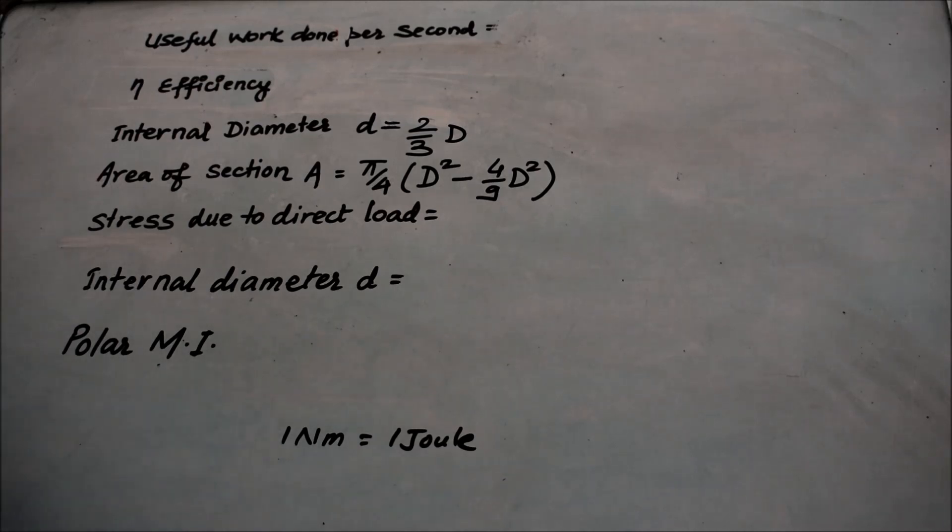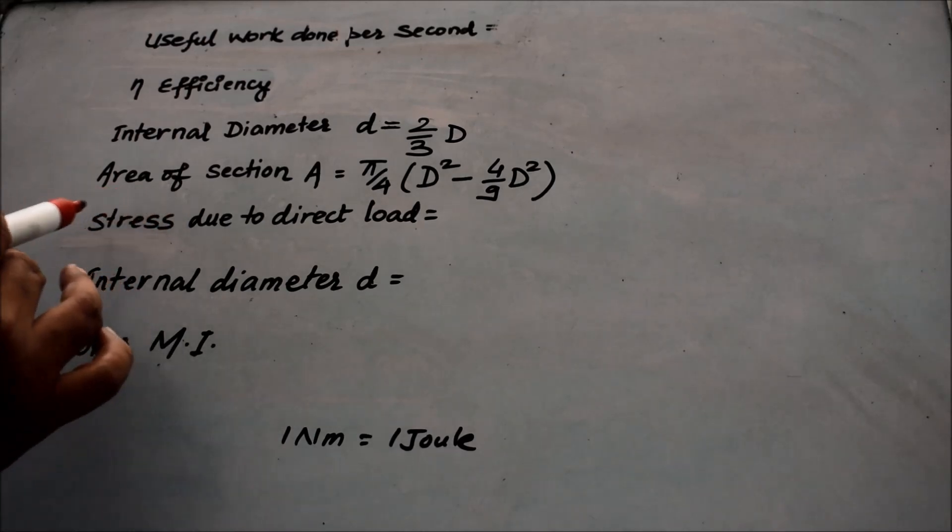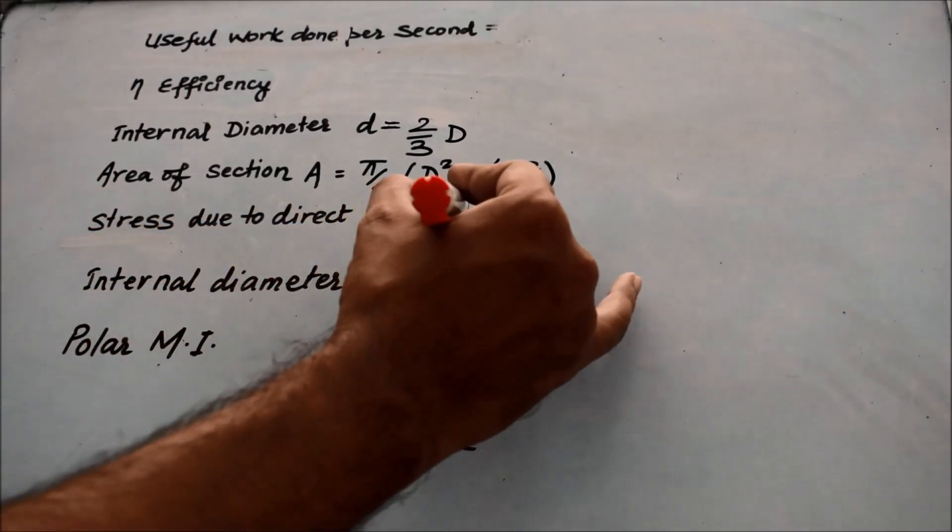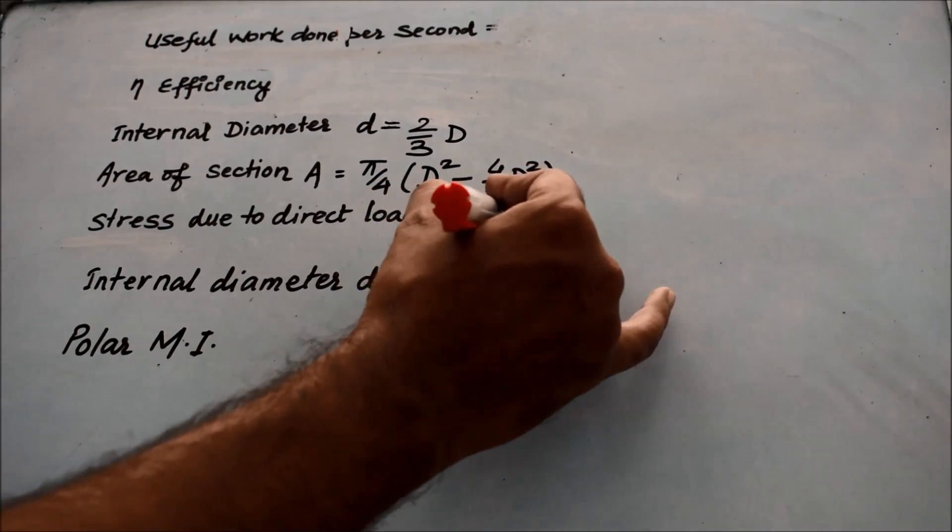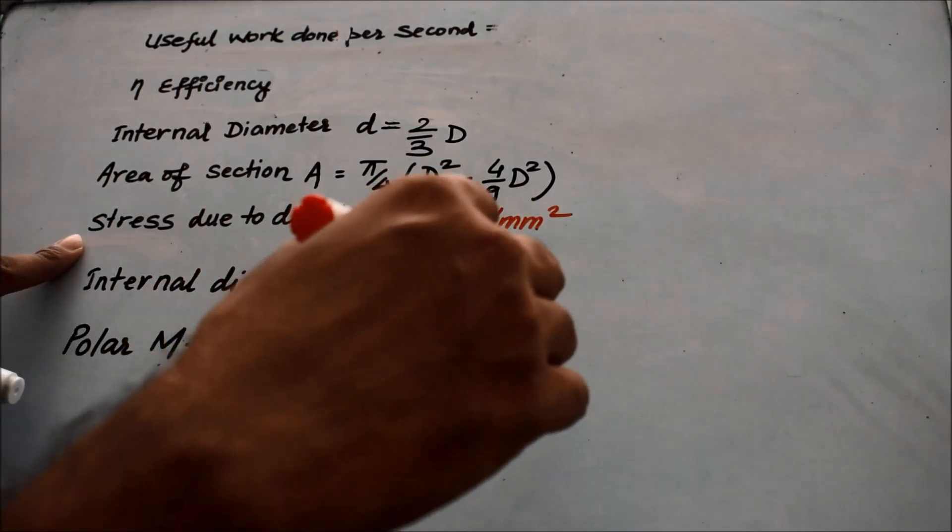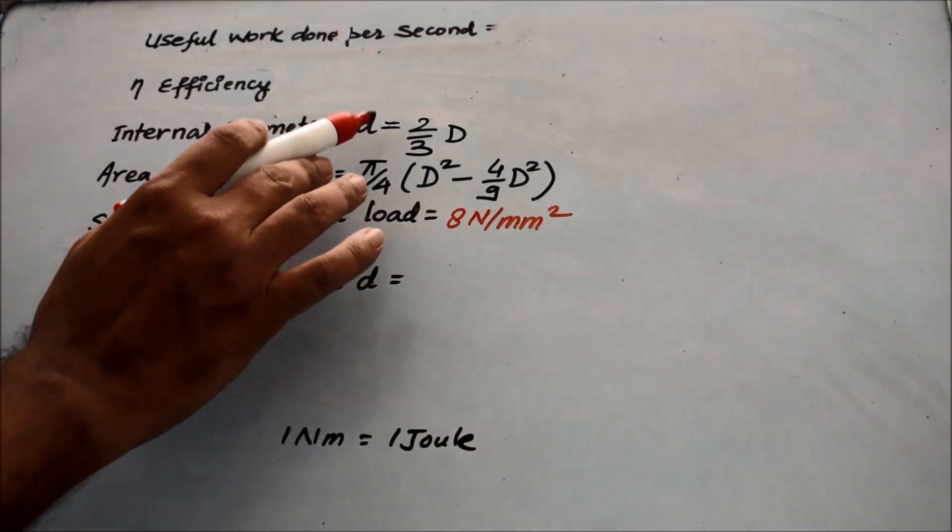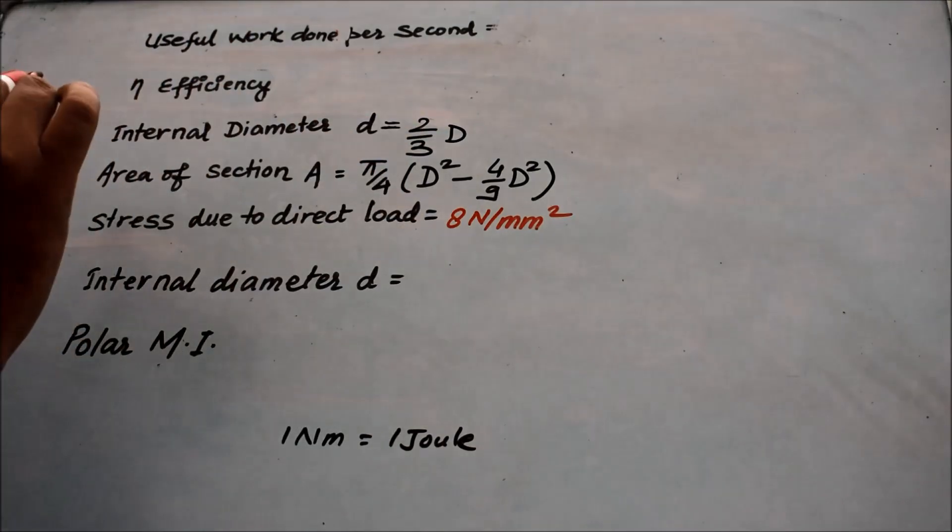To start this question, I have already prepared a list and I would like to explain this problem by taking examples one by one. As you can see in the problem, they have mentioned that the stress due to direct loading is 8 Newton per mm square. Also, the diameter ratio is given: small d equals 2/3 times capital D.